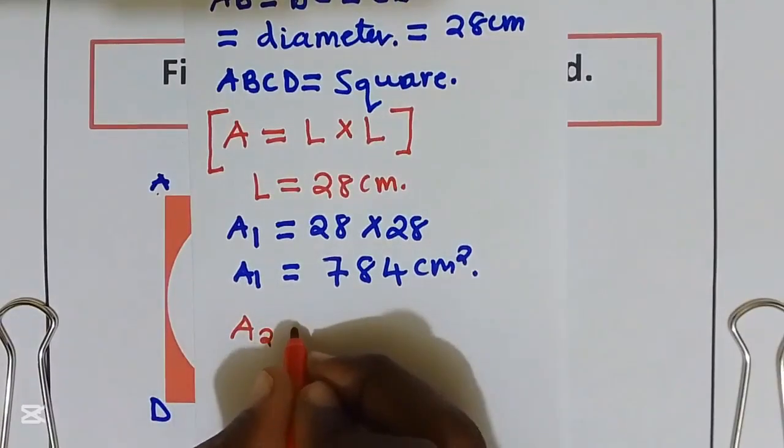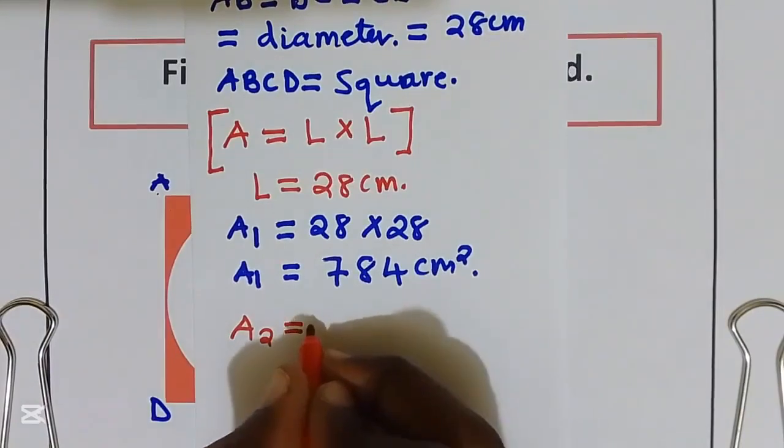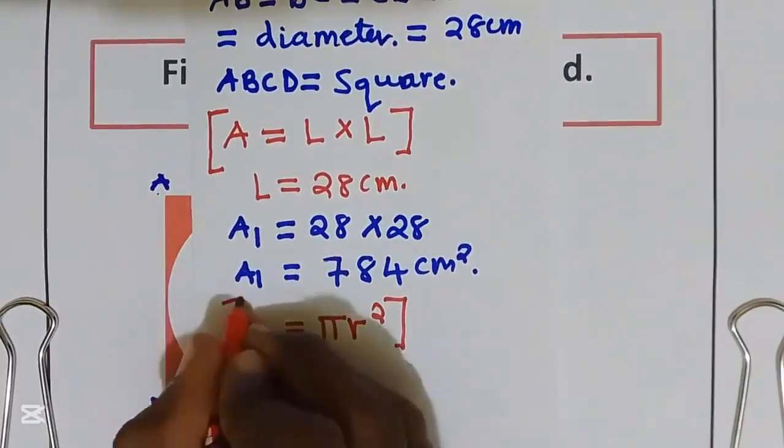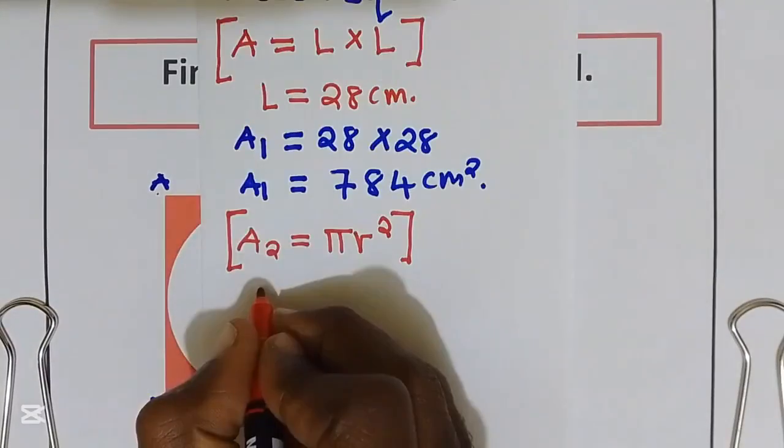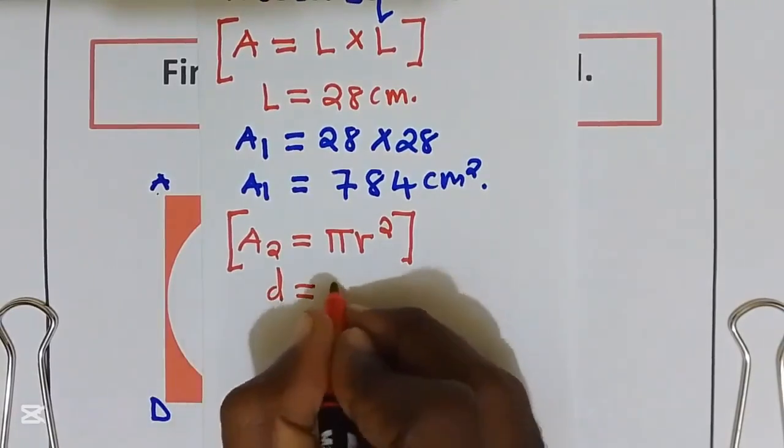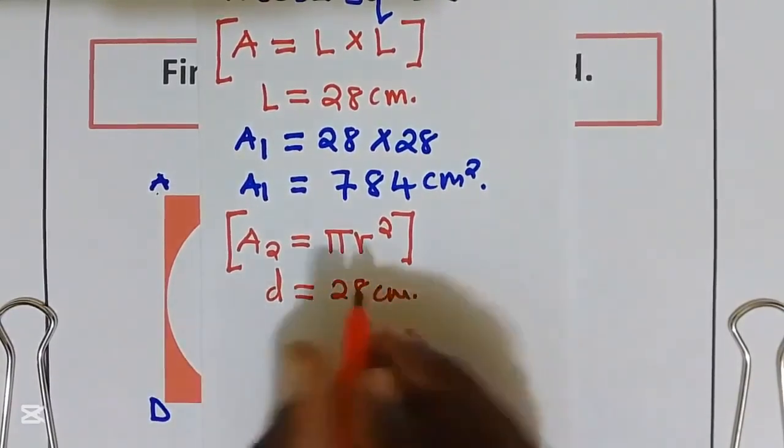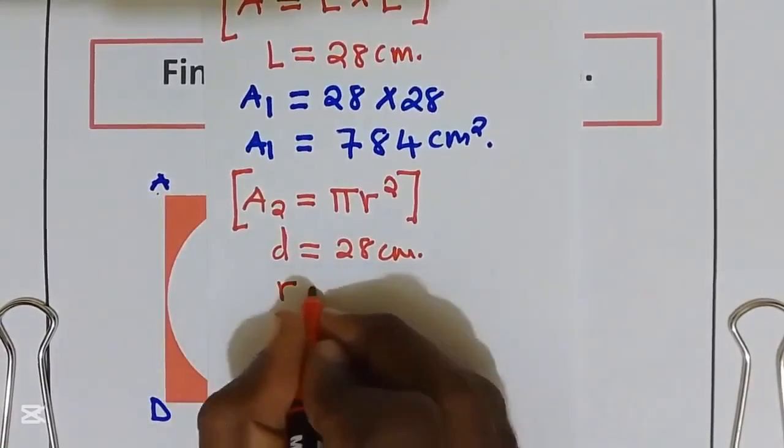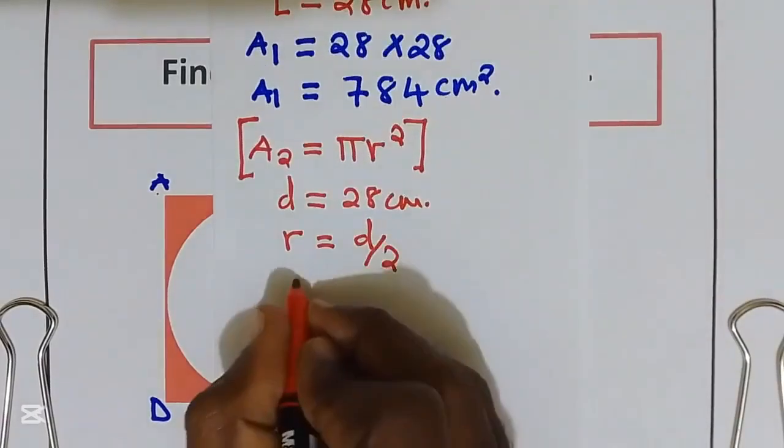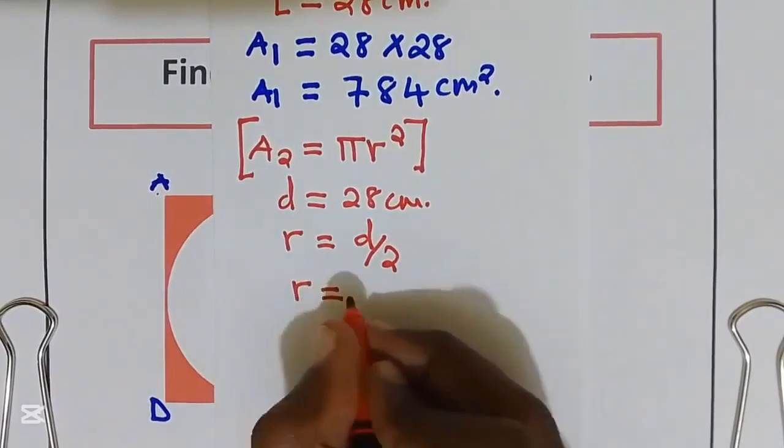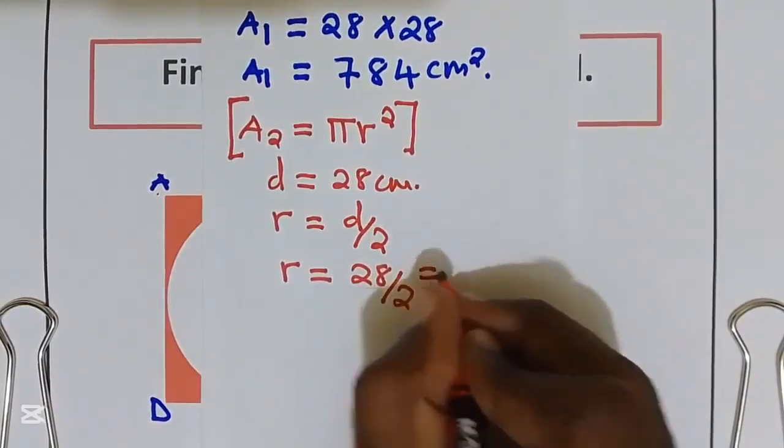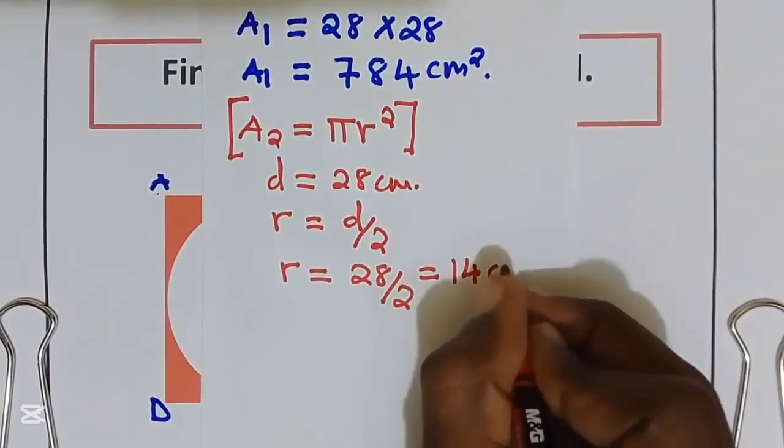They have given us diameter is equal to 28 cm. So our radius is equal to diameter divided by 2. That gives us radius is equal to 28 divided by 2, which gives us 14 cm.